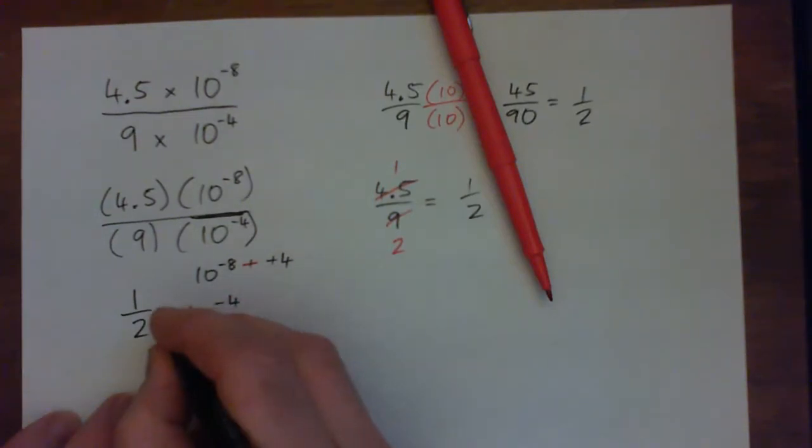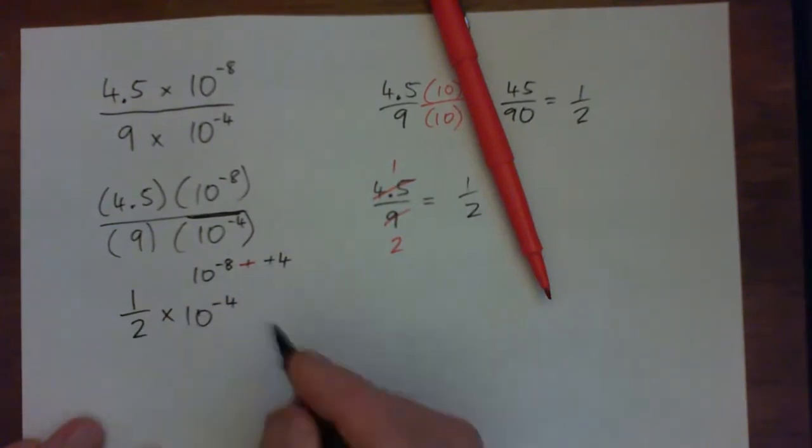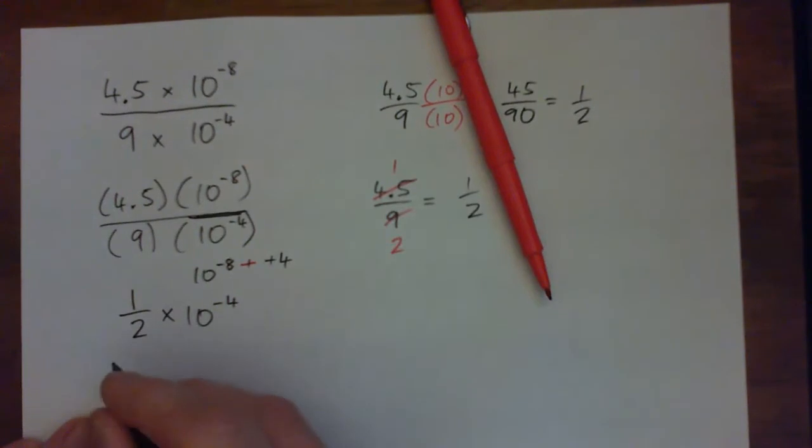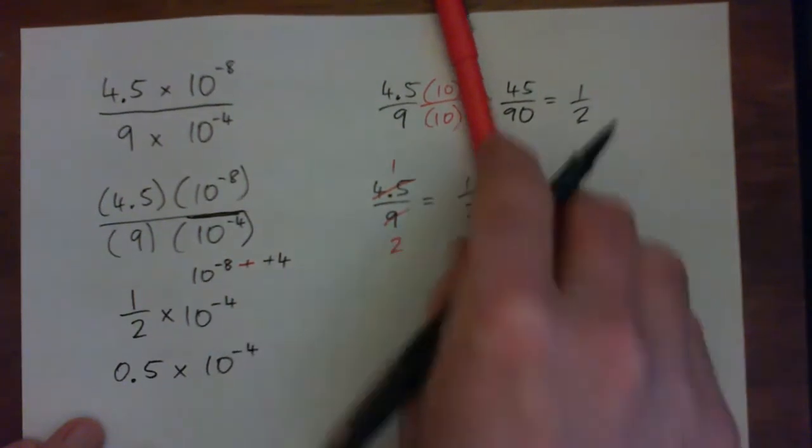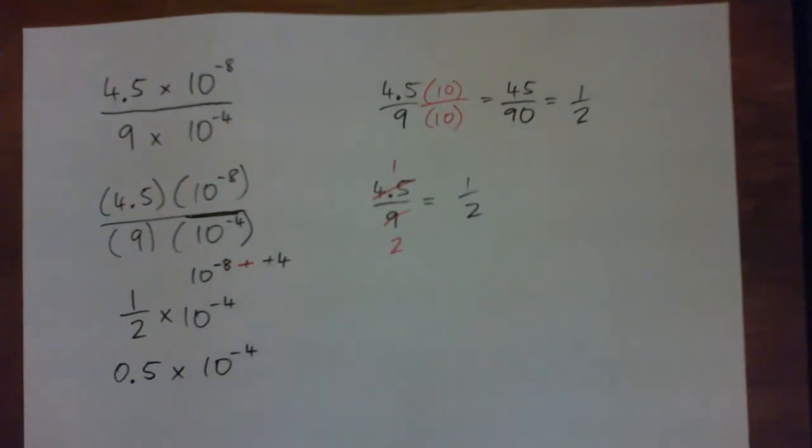So basically we have a half times 10 to the power of negative 4 or 0.5. So half is 0.5, isn't it? Times 10 to the power of negative 4. Now, the problem is this is not in scientific notation yet.